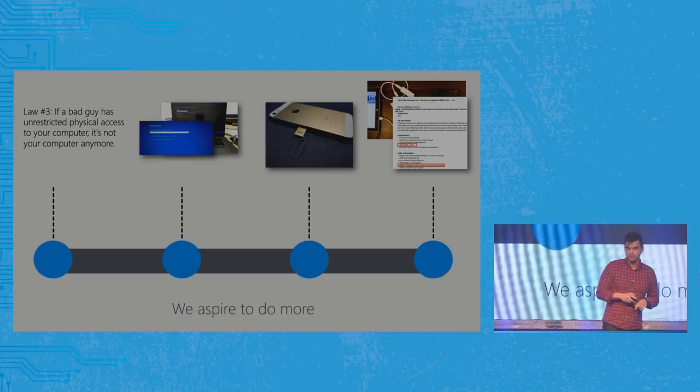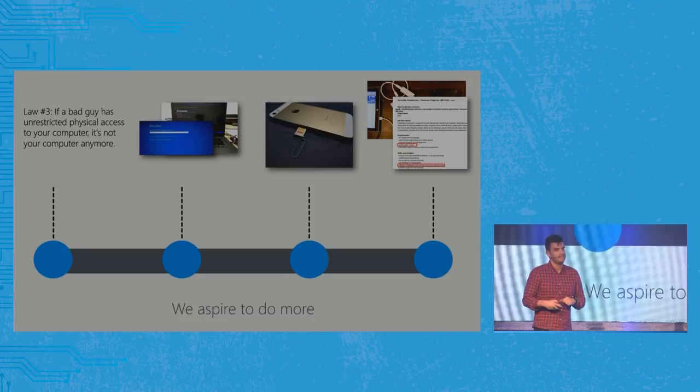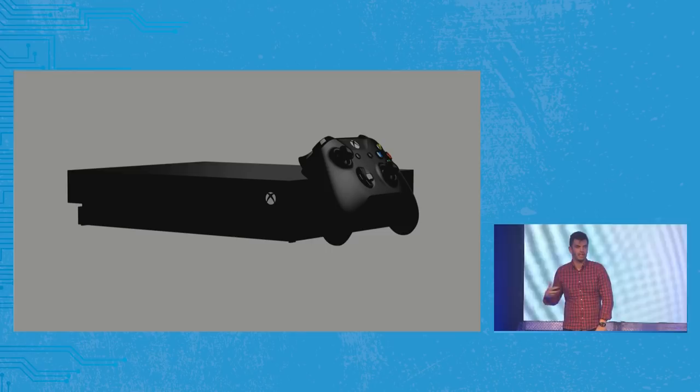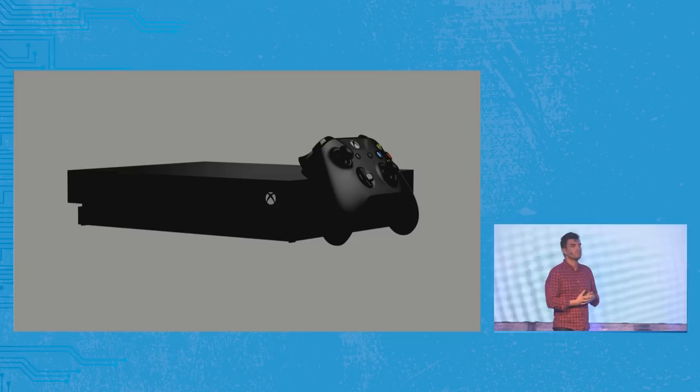Can we do more? Can Microsoft build something that meets all these modern demands and overcomes some of that debt? It turns out we not only built something that does that, it makes very strong guarantees. What you see here is an Xbox One X — in my opinion one of the most secure consumer devices in the world. It's been on the market for several years and we have yet to see someone publicly produce vulnerabilities for it.